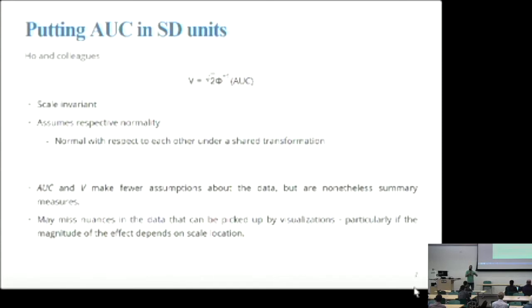But part of the problem with that is in terms of going back to effect sizes, we tend to think of these things in terms of standard deviation units. That area under the curve has some really nice properties in terms of being scale invariant and non-parametric and all of these nice things. This is going backwards in a little bit in some ways, because now we're taking that AUC value and we're mapping it back to a standard deviation type metric. But it does still have fewer assumptions about the data. It assumes respective normality between the two distributions, but the distributions themselves don't actually have to be normal. They just have to have a shared transformation that will make them normal. So AUC and V provide more about what's going on because they're trying to take the full distribution into account. But they're still summary metrics nonetheless, and so they may miss some nuance which you can get through the visualizations.